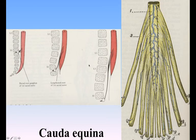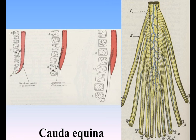As a consequence of the inequality in the rates of growth of the Medulla Spinalis and vertebral column, the nerve roots, which in the early embryo passed transversely outward to reach their respective intervertebral foramina, become more and more oblique in direction from above downward, so that the lumbar and sacral nerves descend almost vertically to reach their points of exit. From the appearance these nerves present at their attachment to the Medulla Spinalis, and from their great length, they are collectively termed the Cauda equina.